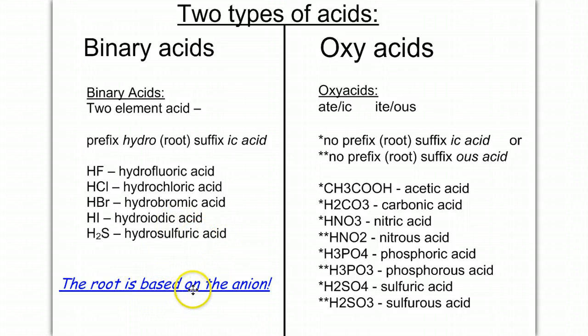The root is based on the anion. And so because HF would be called hydrogen fluoride, IDE, this is going to be called hydrofluoric acid. HCl is normally going to be called hydrogen chloride, but now it's going to be called hydrochloric acid. So notice that each of my binary acids, the root F-C-L-B-R-I-N-S, the anion name all end in IDE. And so when it ends in IDE, we're going to start with hydro and end with ic acid.